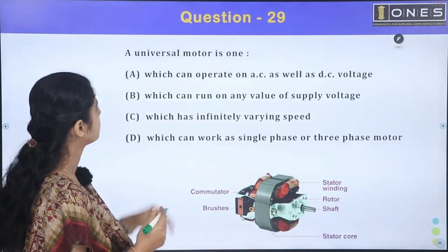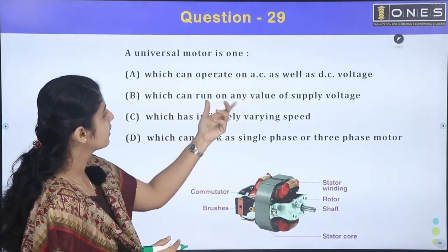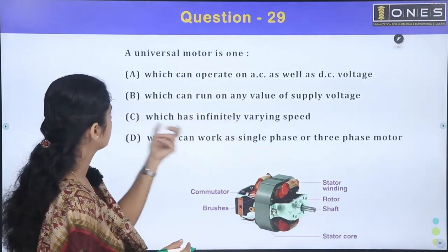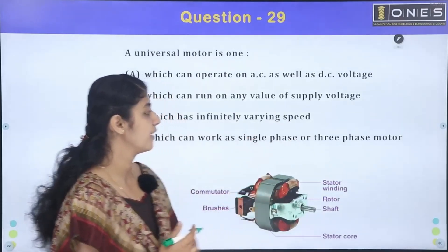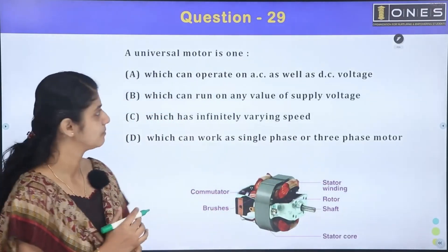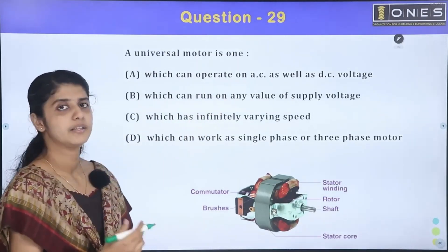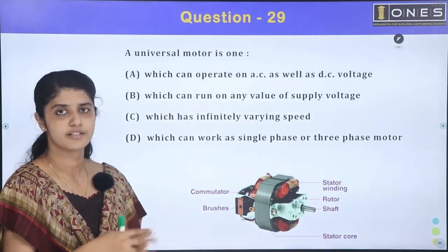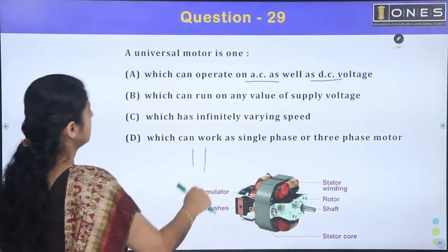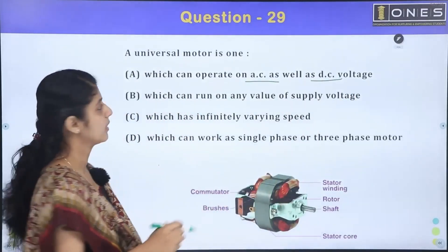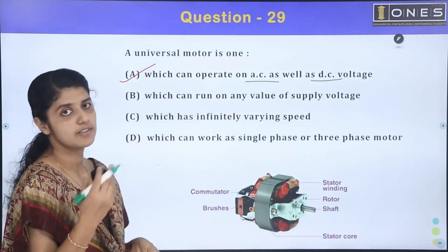A universal motor is one which can operate on AC as well as DC. It can run on any value of supply voltage and has infinitely varying speed. It can work as a single-phase or three-phase motor. The universal motor is essentially a modified version of a series motor.